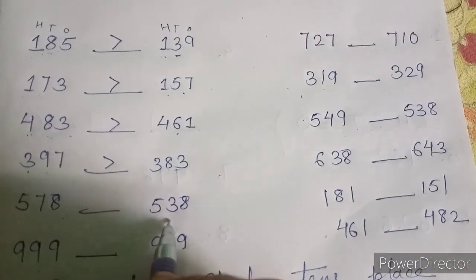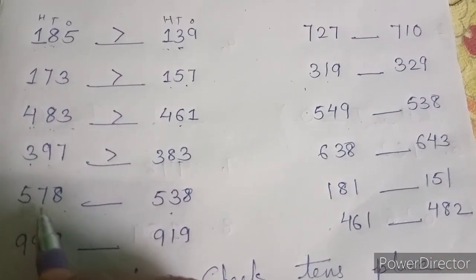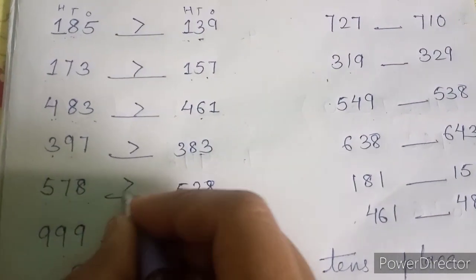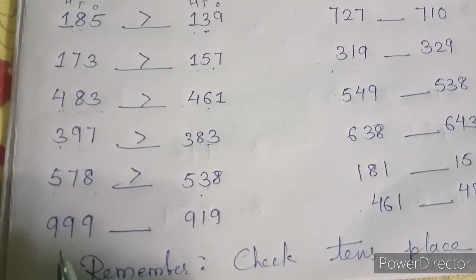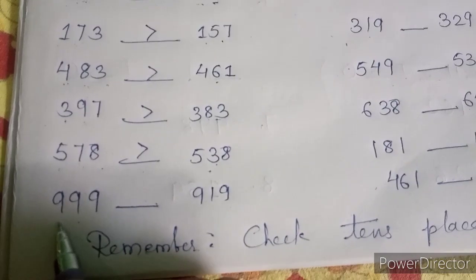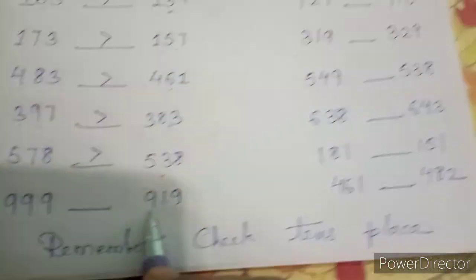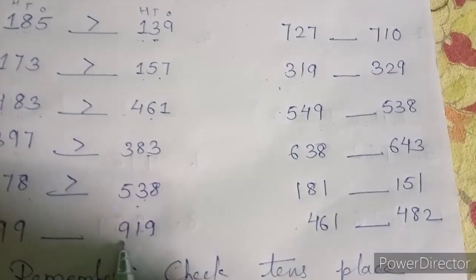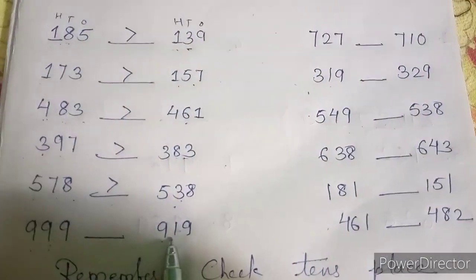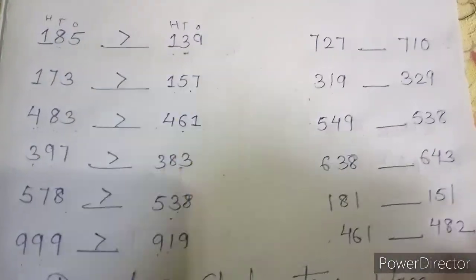Five five same hai. But the number at the tenth place is seven and three here, so seven is greater. Here the number at the hundred place is nine and here also nine. But the number at the tenth place is nine here and here is one, so nine is greater.